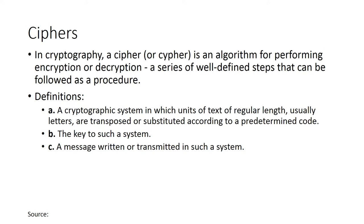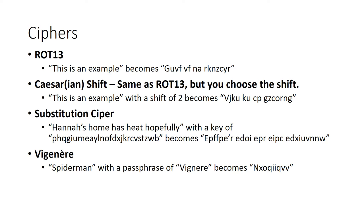Next thing — speaking of ciphers, which I've mentioned a few times: in cryptography, a cipher (sometimes spelled with a Y) is an algorithm for performing encryption or decryption. It's a series of well-defined steps that can be followed as a procedure. Some definitions of ciphers include: A — a cryptographic system in which units of text of regular length, usually letters, are transposed or substituted according to a predetermined code; B — the key to such a system; and C — a message written or transmitted in such a system. Let's go ahead and dive into a few examples.